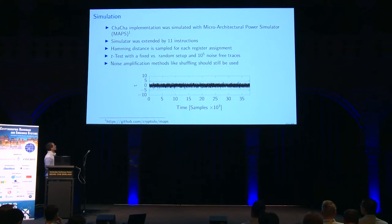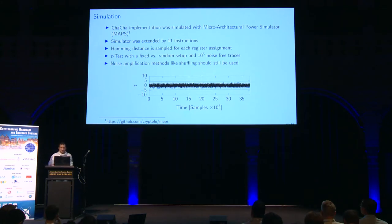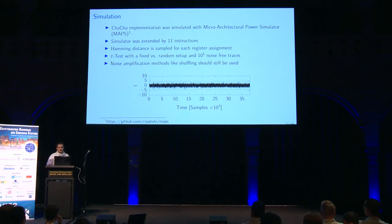We also simulated our ChaCha cipher implementation using the microarchitectural power simulator called MAPS, extending it by 11 instructions. The simulator samples the Hamming distance for each register assignment. Performing a t-test on a fixed-versus-random setup with 100,000 noise-free traces does not result in any leakage. However, we think noise amplification methods like shuffling should still be used, since this is just a simulator.